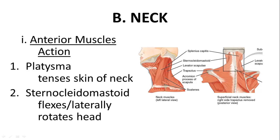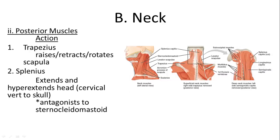There are a lot of muscles in the neck as well. Two of the main ones include the platysma, which tenses the skin of the neck, and the sternocleidomastoid — a big muscle that goes across behind the ear and then onto the collarbone. You also have posterior muscles of the neck: the trapezius, which is a big muscle that goes all the way down to the middle of the back, and the splenius, which extends and hyperextends the head. The splenius is an antagonist to the sternocleidomastoid.